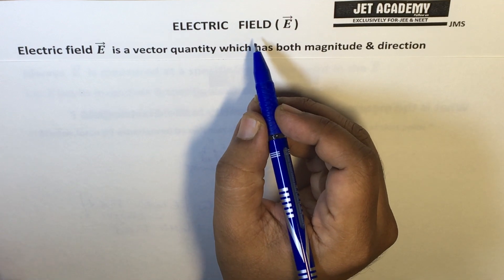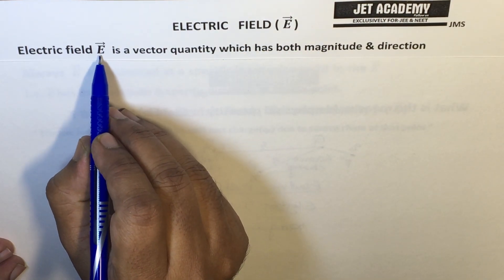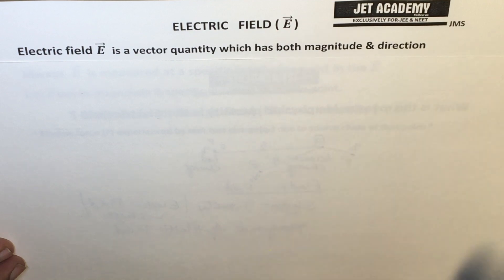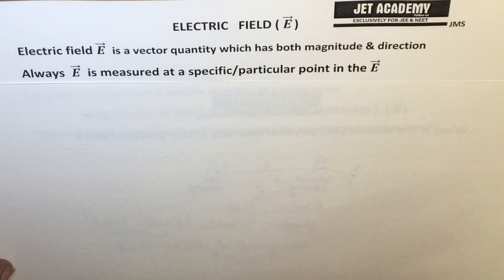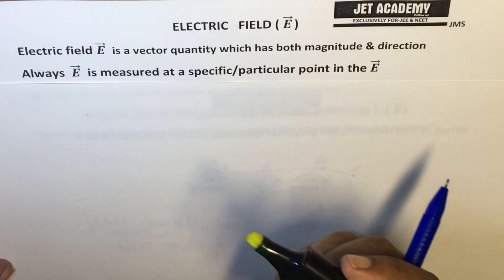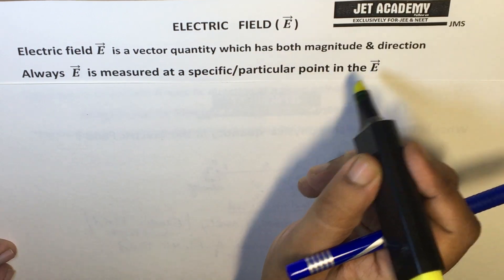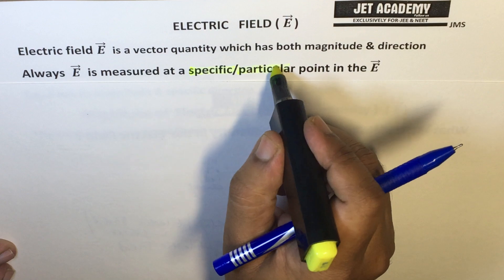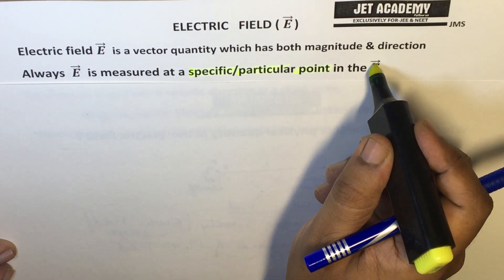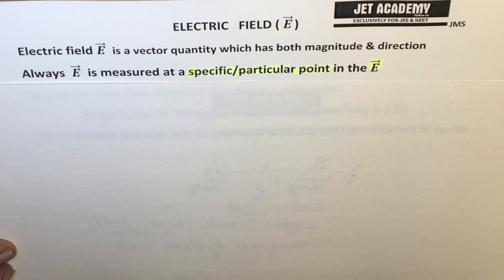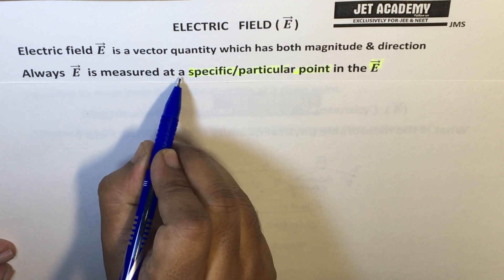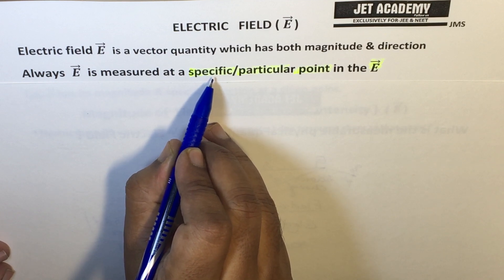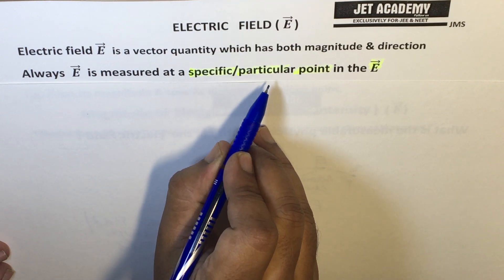Electric field, or electric intensity, represented by a vector, is a vector quantity — meaning it has both magnitude and direction. Electric field E is always measured at a point, that is, a specific or particular point in the electric field. The concept of 'at a point' is very important; we cannot say simply 'around a space.' It is always measured at a specific, particular point.